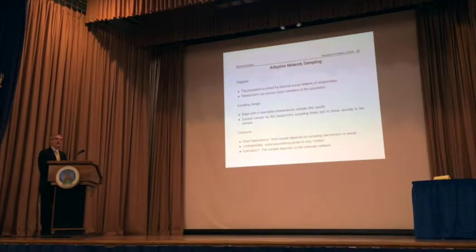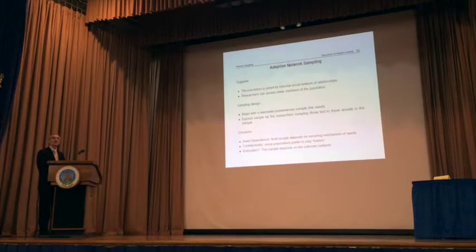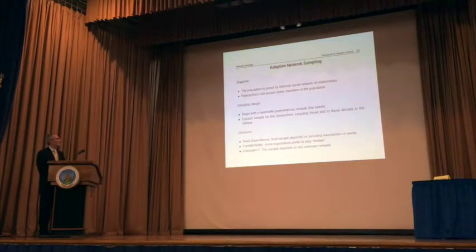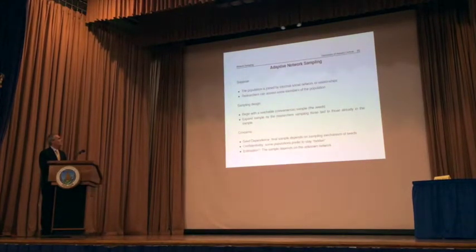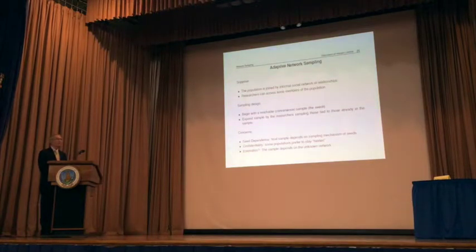We move from sampled individuals to other individuals within the sampling frame using this approach. One concern is the so-called seeds — the initial set. How dependent is the final sample upon the original seeds? In cases where seeds are not chosen via a probability sample, we need to account for that dependence. Also important are confidentiality and privacy issues: as we track those tied to existing sample members, we must be very careful when dealing with hard-to-reach or potentially stigmatized groups.